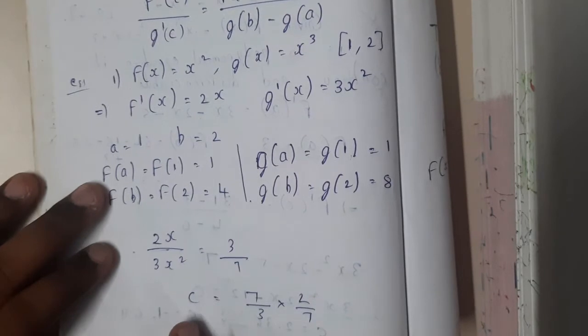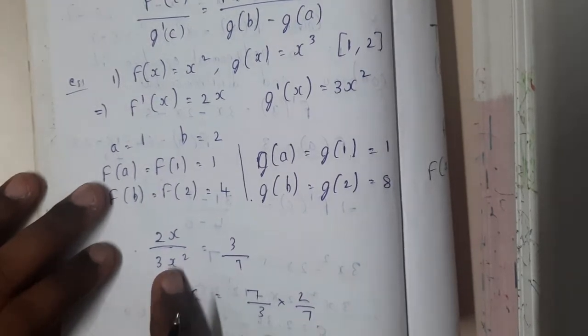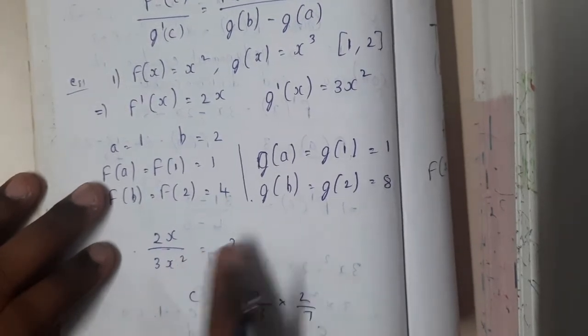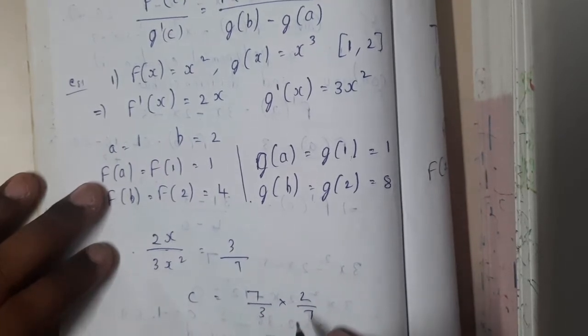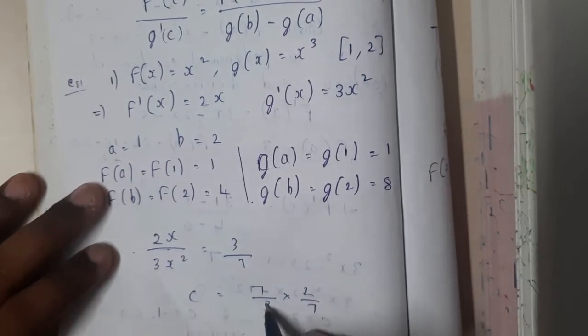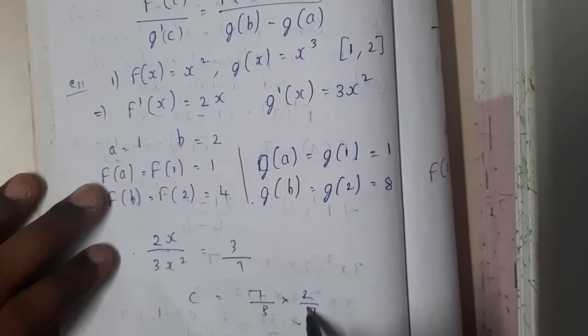So what is c? C is nothing but this x. So I'll be pushing that to that side and this will go to that side. So 2 by 3 into 7 by 3. Once you solve it, we got the value as 1.5.